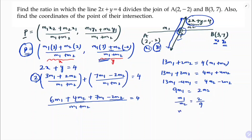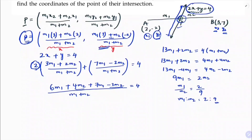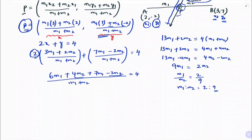Simplifying: 13m1 - 4m1 = 9m1, and 4m2 - 2m2 = 2m2. So 9m1 = 2m2, giving m1/m2 = 2/9. Therefore, the ratio m1:m2 is 2:9. The line 2x plus y equals 4 divides AB in the ratio 2:9.